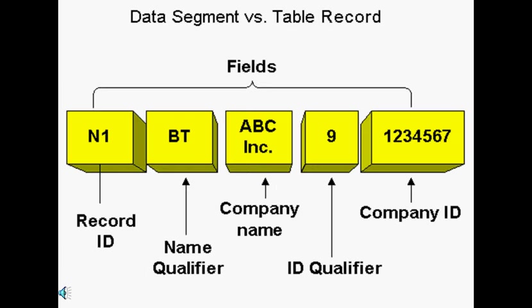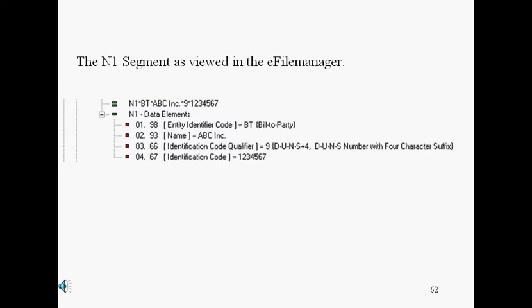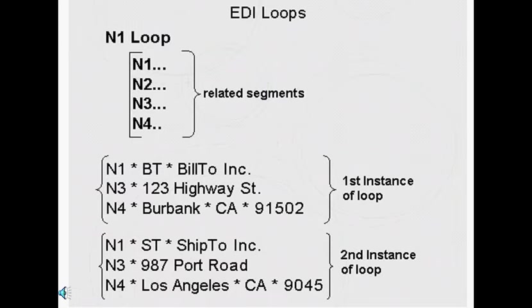Some view data segments to be like records and their data elements to be like fields. Data segments can be viewed better by using the EDI-DEV E-File Manager. Here we have a section that displays the same N1 segment — note how the descriptions of the codes are displayed next to them. Sometimes data segments have to be read together to obtain the correct information. That is when we use EDI loops to denote such relations. EDI loops are used to keep related segments together so that together they can convey the correct information. Loops also make it possible to repeat a group of related segments.